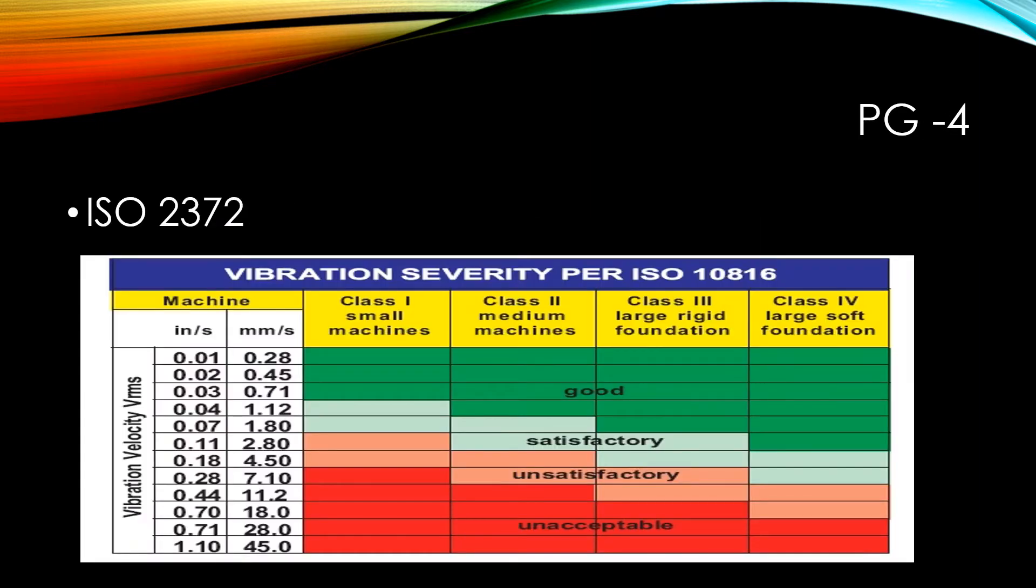So the next question is which ISO standard should we follow to find out the vibration severity of the machinery? Here we are using ISO 2372 that is BS 4675. The machinery is classified into four classes: class 1 for small machines, class 2 for medium machines, class 3 for large rated foundation, class 4 for large soft foundation. We can refer this table while taking the vibrations.